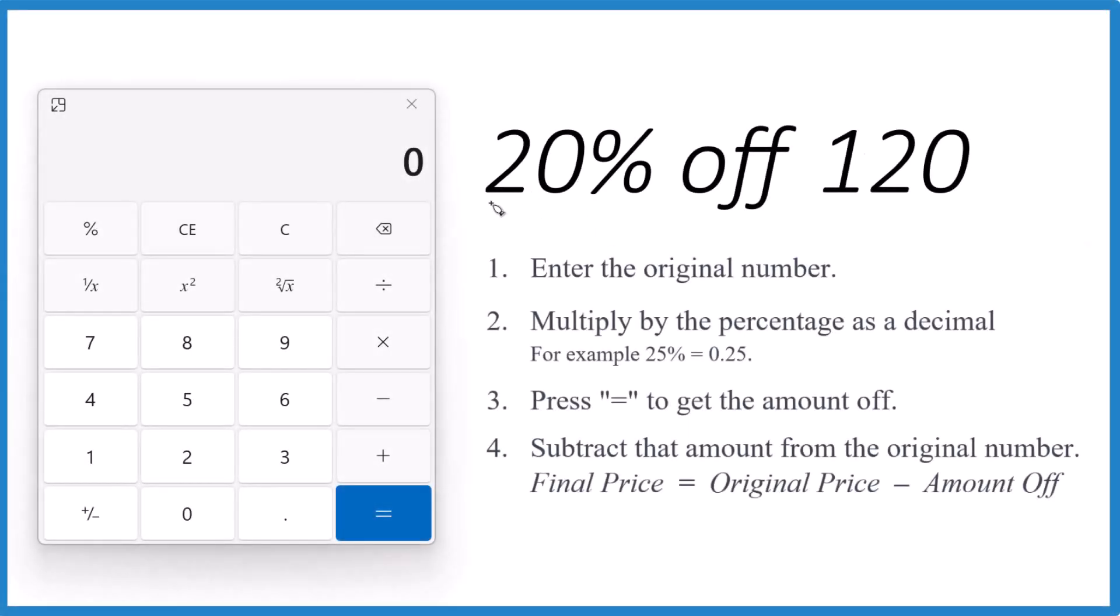This is Dr. B and let's take 20% off of 120. Let's call that $120. First off, we enter the original number, that's the 120.